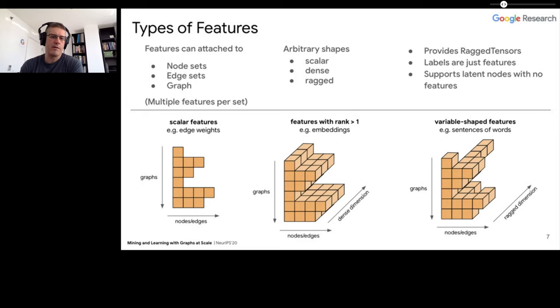The types of features that you want to be able to attach can be scalar, like an edge weight on a set of edges. They can be dense features, like a pre-computed embedding from some other team that's a tensor of rank one or more. And variable-shaped features, like your nodes are associated with a sentence and a sentence is a variable number of words. We support all of these different shapes of features, and they can be attached to node sets, which is the common case, but equally to edge sets. You may have complex features on edges - we have cases where we have multiple similarity functions you may want to associate with edges. We also provide a place to put global features.